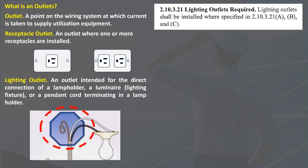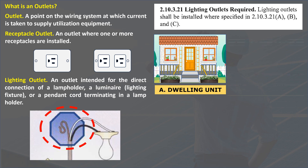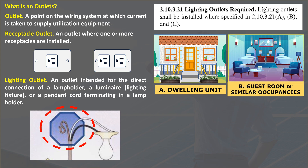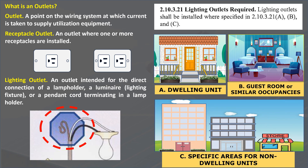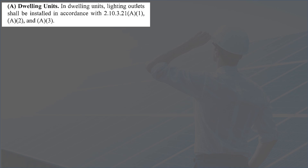Lighting outlets shall be installed where specified in 2.10.3.21 (a), (b), and (c). These subsections cover the code rules for dwelling units, guest rooms in hotels, motels, or similar occupancies, and specific areas for all occupancies.